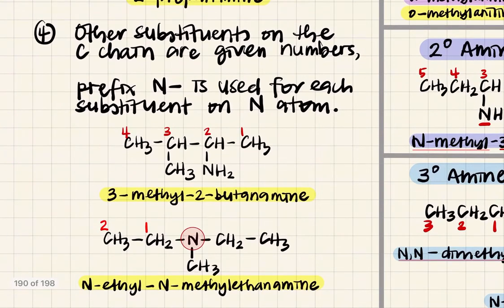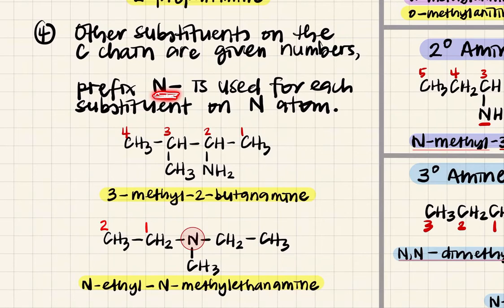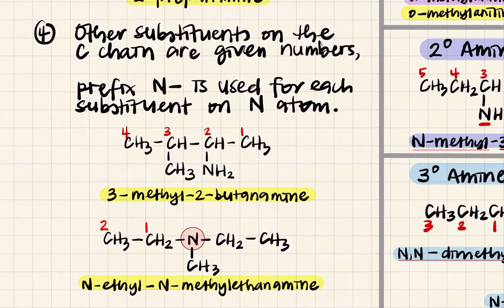Other substituents on the carbon chain are given numbers as usual when attached to carbon. But if a substituent is attached to a nitrogen — which is the case for secondary and tertiary amines — you will use the prefix 'N'. So it is labeled N, not a number 1, 2, 3, because it is attached to the amino group's nitrogen.